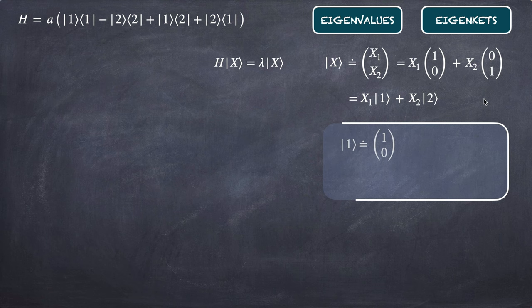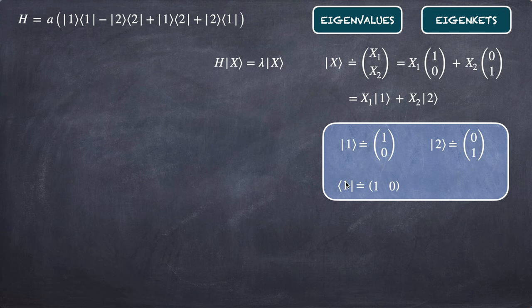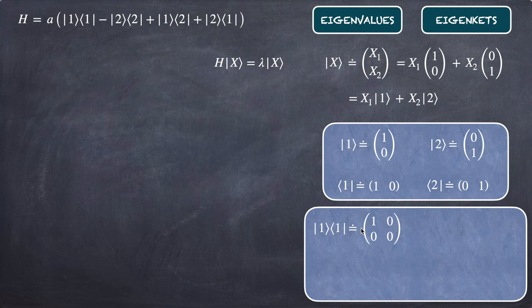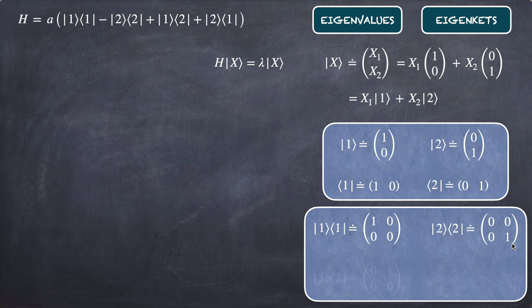Let's write the bras and kets: ket |1⟩ is (1, 0) and ket |2⟩ is (0, 1). The bra ⟨1| is the row matrix (1, 0) and the bra ⟨2| is the row matrix (0, 1). The projector |1⟩⟨1| is the product of the ket by the bra, resulting in the matrix [[1,0],[0,0]]. Similarly, |2⟩⟨2| gives [[0,0],[0,1]], |1⟩⟨2| gives [[0,1],[0,0]], and |2⟩⟨1| gives [[0,0],[1,0]].